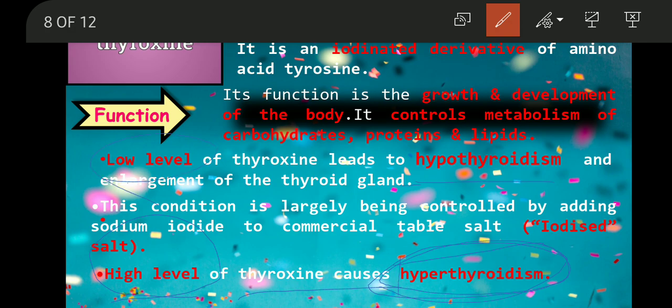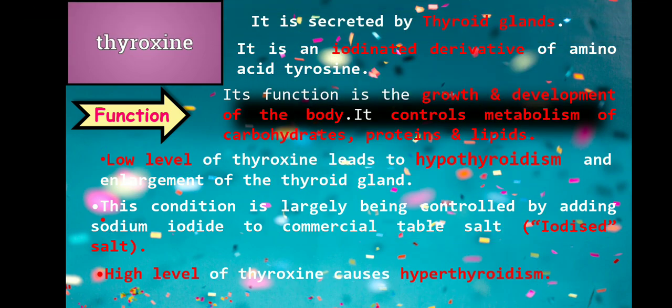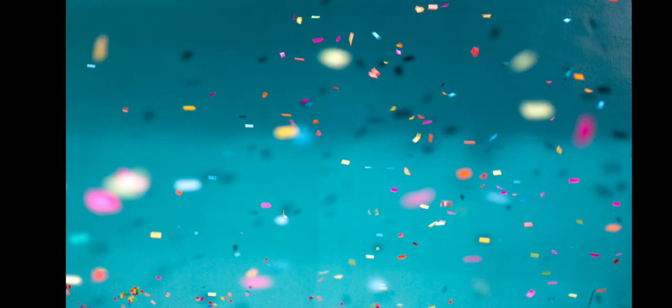Low level of thyroxine secretion is called hypothyroidism; high level secretion is called hyperthyroidism — both are diseases. The function of thyroxine to remember is: growth and development of the body, because of its control of metabolism of carbohydrates, proteins, and lipids.